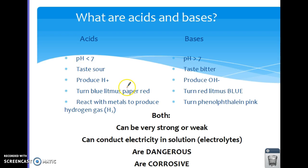They turn blue litmus paper red. I try to remember that acid ends in a D, and red ends in a D, and acids also react with metals to produce hydrogen gas (H2).